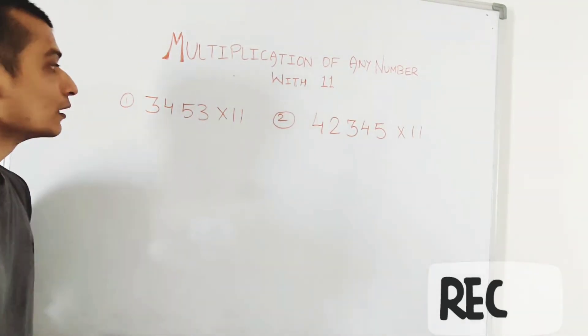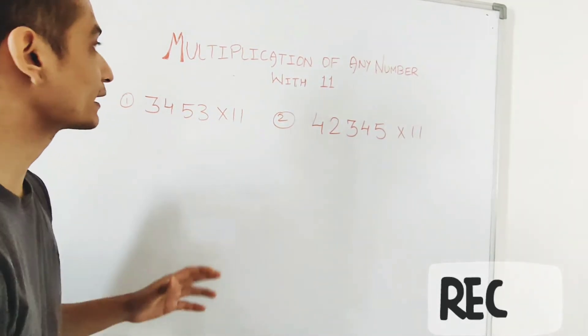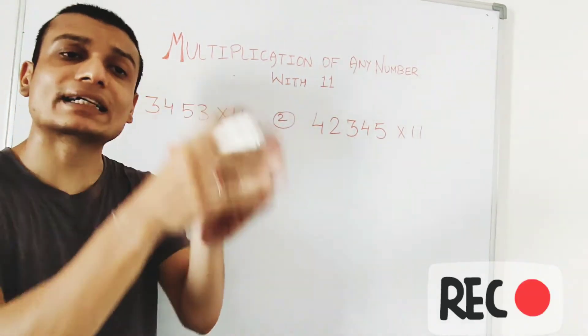Let us see, here the number is 3, 4, 5, 3, into 11. Today we are looking at the multiplication of any number with number 11. How can we do it in fraction of second?